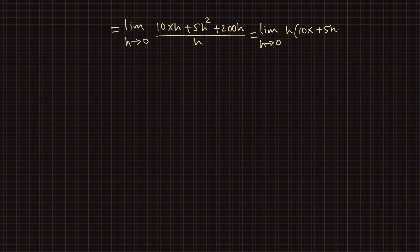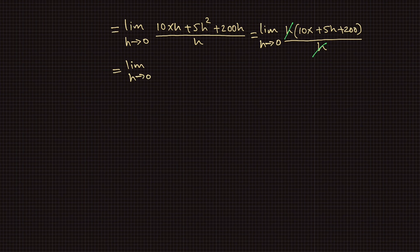Canceling out h, we have the limit as h goes to 0 of 10x plus 5h plus 200, which gives 10x plus 200.